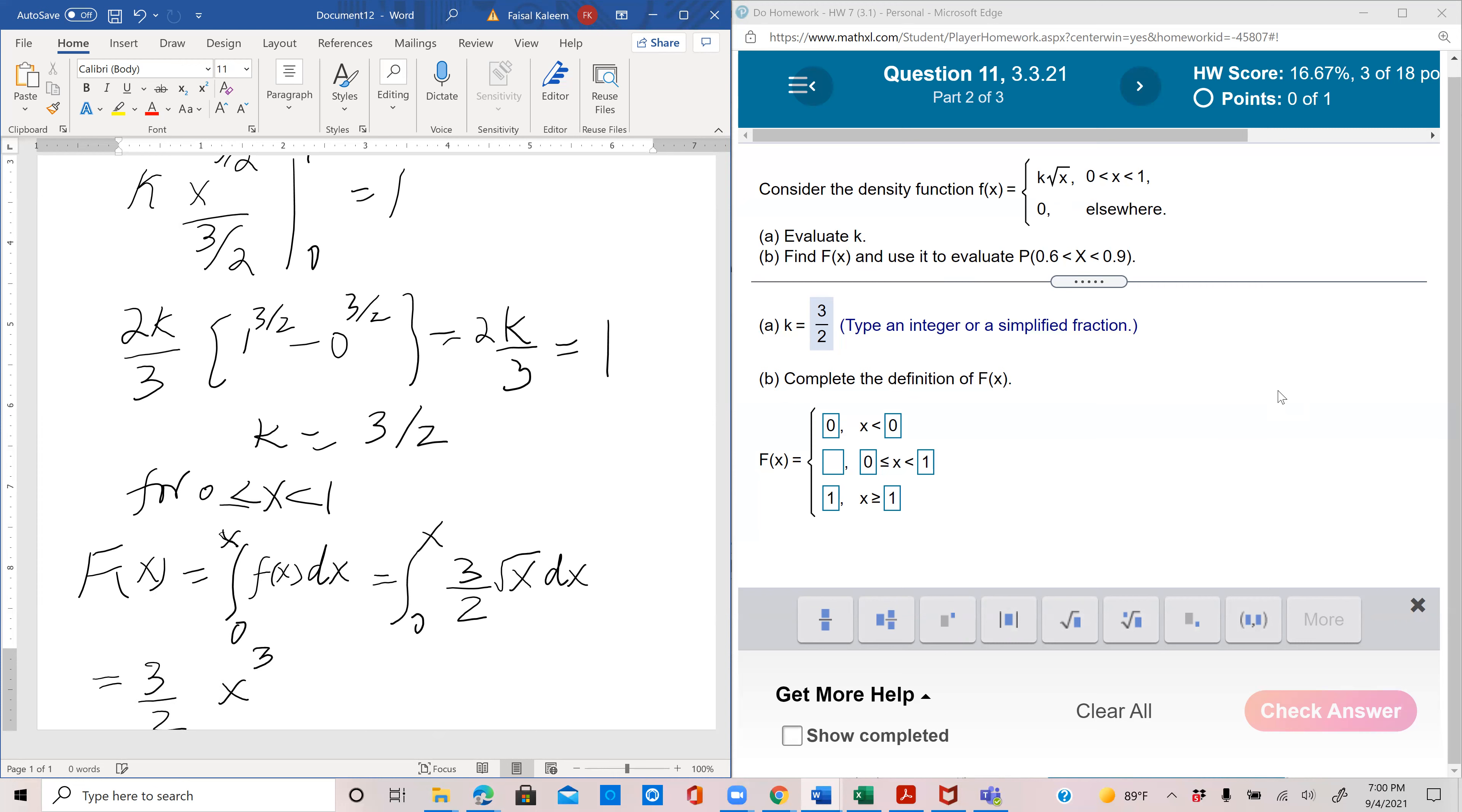This integrates to x to the 3 halves over 3 halves as before. Now this cancels out with this. And the limits are from 0 to x. So basically it would just be x to the 3 halves minus 0 to the 3 halves, which is just x to the 3 halves.